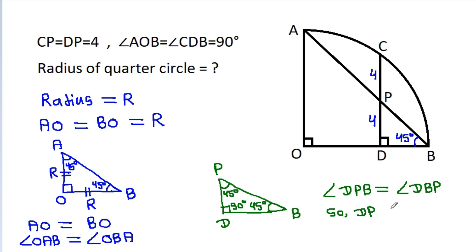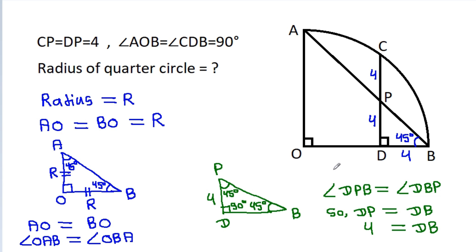Since angle DPB equals angle DBP, side DP will be equal to DB. DP is 4, so DB is also equal to 4. And OD will be equal to R minus OB, where AO is R.